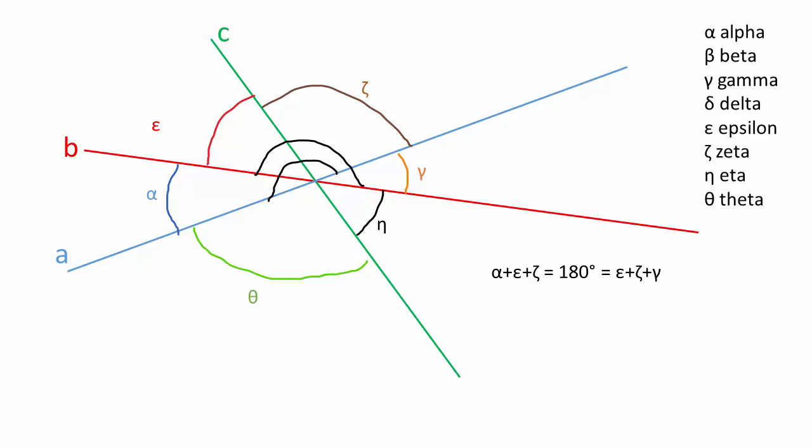But epsilon plus zeta plus gamma is also a hundred eighty degrees, because it's one side of the line B, right? That's right.